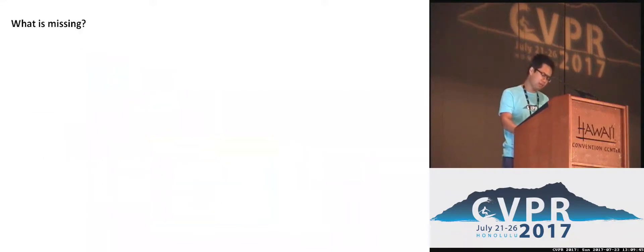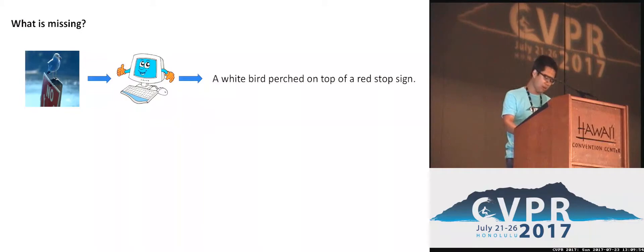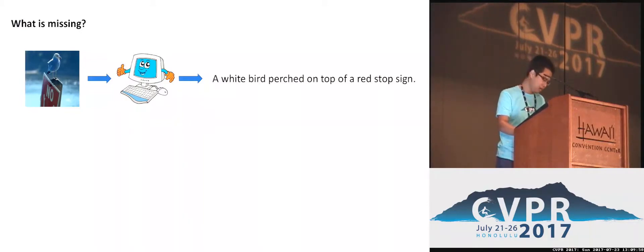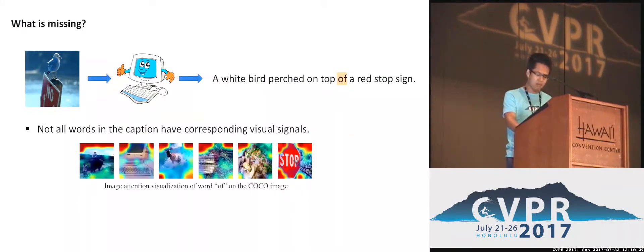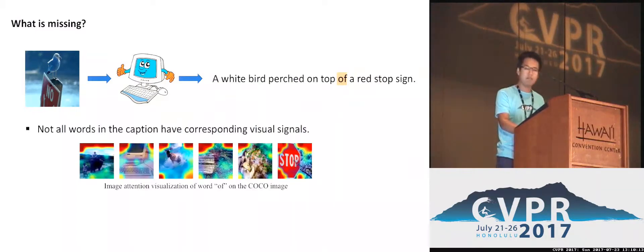So we would like to ask ourselves a question: what is still missing with current attention-based image captioning systems? Let's look at an example. Given an image, the corresponding caption is 'a white bird perched on the top of the desktop sign.' We find that not all words in the captions have corresponding visual signals, such as the word 'of.' If we visualize the corresponding spatial attention map on different images, we find that it always focuses on the boundary of the counterpart — that is some undesirable artifact caused by always attending to the image.